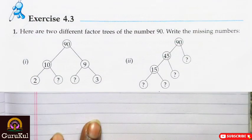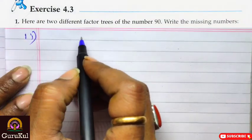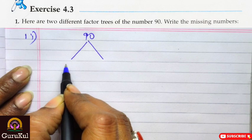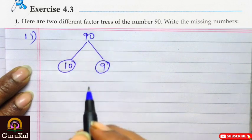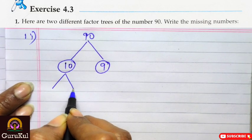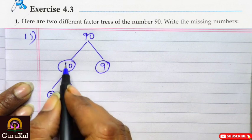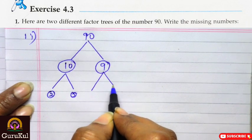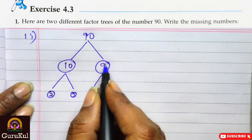Question number 1 says that there are two different factor trees of the number 90 and we have to write the missing numbers. Part 1: 90 divided into 9 and 10. 9 tens are 90. Now 10 has been further divided into 2 groups. 2 fives are 10, so it will be 5 here. Next, 9 is further divided into 2 groups. One of the figures is 3. 3 threes are 9.